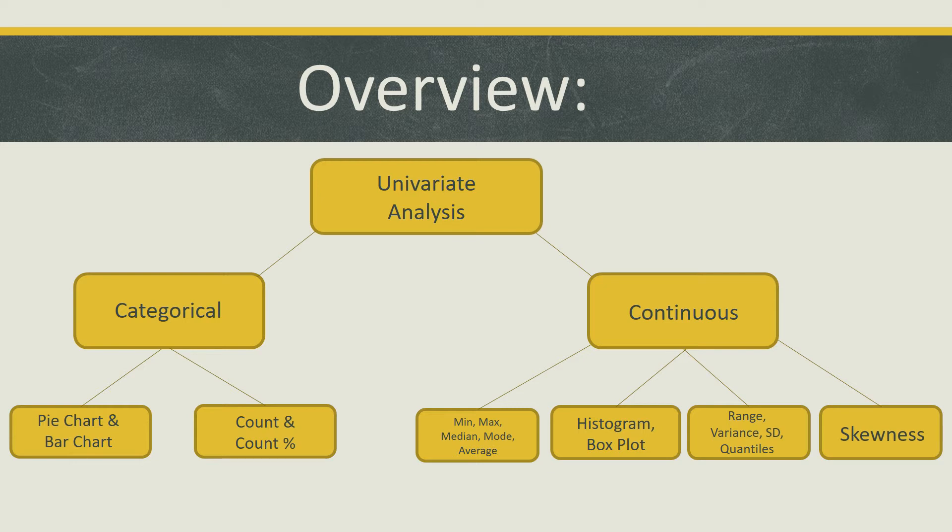When dealing with continuous variables, there are more options to choose from. Histograms and box plots can be used to provide graphical representations of the distribution of numerical data and depict groups of numerical data through their quartiles. You can also summarize data by determining the minimum, maximum, median, mode, and average found within a dataset.